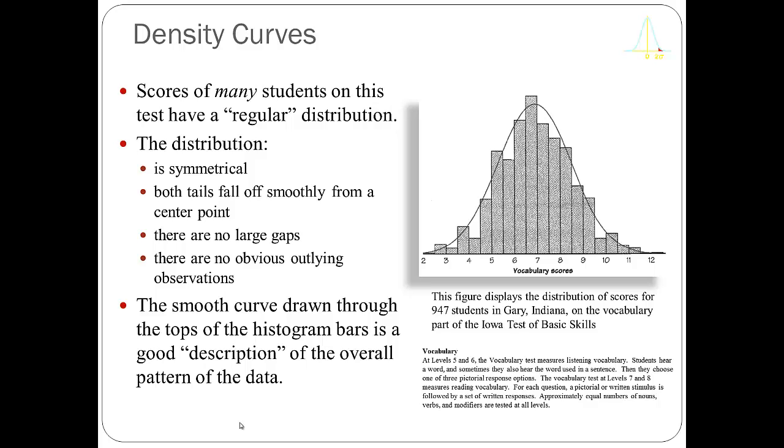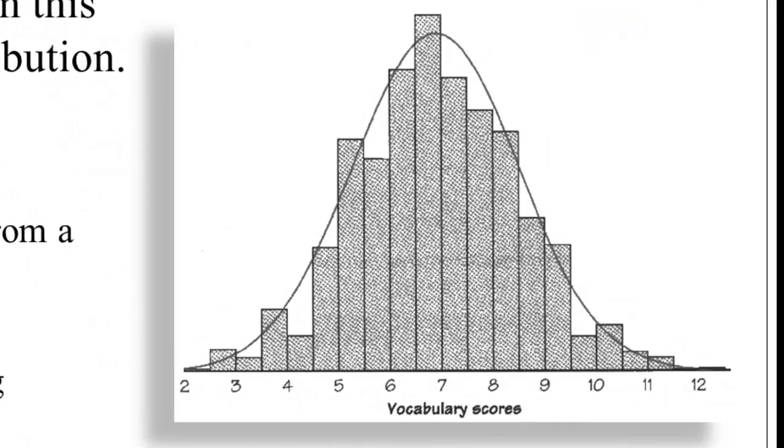We're going to look at density curves, which are the distribution of a frequency of a continuous variable. If you look at the graphic on the right, you see a frequency distribution of vocabulary scores. Technically, the bars indicate this is a discrete distribution shown with a histogram.